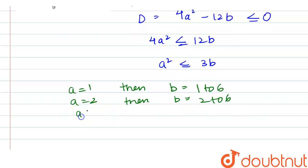When a = 3, then b lies from 3 to 6. And also when a = 4, then b will be 6.